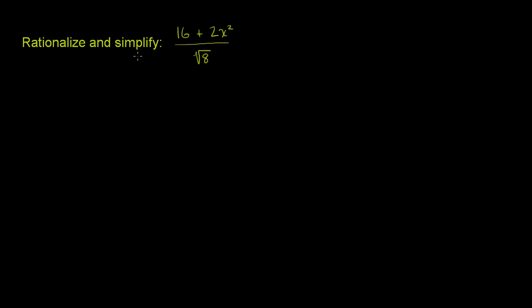We're asked to rationalize and simplify this expression. And like many problems, there's multiple ways to do this. We could simplify a little bit, then rationalize, and then simplify a little bit more. Or we could just rationalize and simplify. Rationalize is just a fancy way of saying we don't want to see any square roots of numbers in the denominator. So try to get these things outside of the denominator.